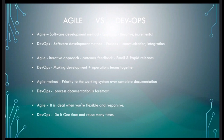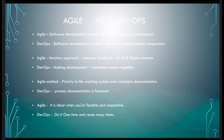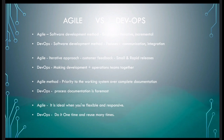Integration also plays a crucial role. Build, deployment, and testing were previously handled by different teams with different tool stacks. In DevOps, we do complete automation, so we need to link all these tool stacks together. Once development is done, everything is automated, and there must be integration between all these tool stacks.